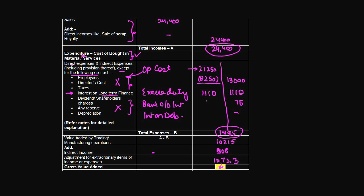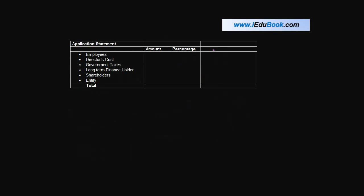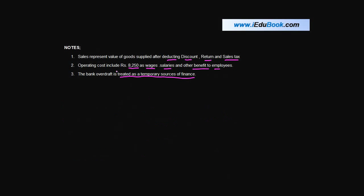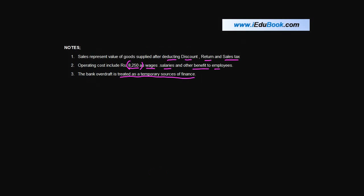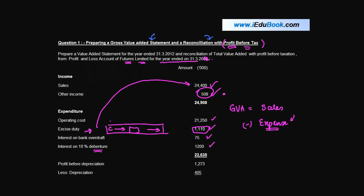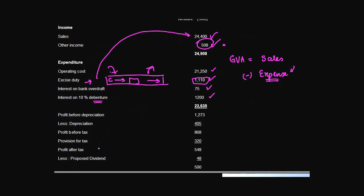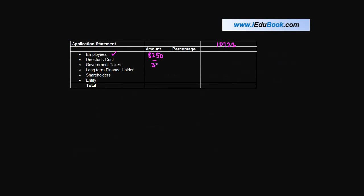This gross value added has to be shown as to how it is applied to various stakeholders, which is six of these categories. 10723 is the total gross value you have added. Out of this, how much went to the employees? In the adjustments, you were told that operating costs included 8250 as wages. So employees will be 8250. There is nothing given specifically on the directors cost. Government taxes - even excise duty is a tax, but because we recover it from the customer and pay it to the government, we don't include it as an application. What is considered as the application is the tax provision, which is 320.